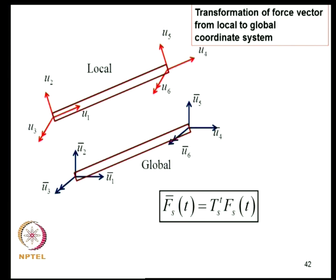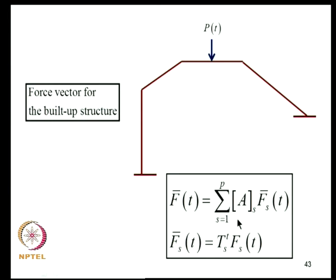The equivalent nodal forces are computed in the local coordinate system of the beam. To convert to the global coordinate system, the same transformation rule used for displacements applies to forces, since force is a vector. For a built-up structure, the global force vector is assembled from element-level force vectors using the same A matrices: F_global = sum over S of (A^S)^T * F_bar^S, where F_bar^S is the element force vector in global coordinates.